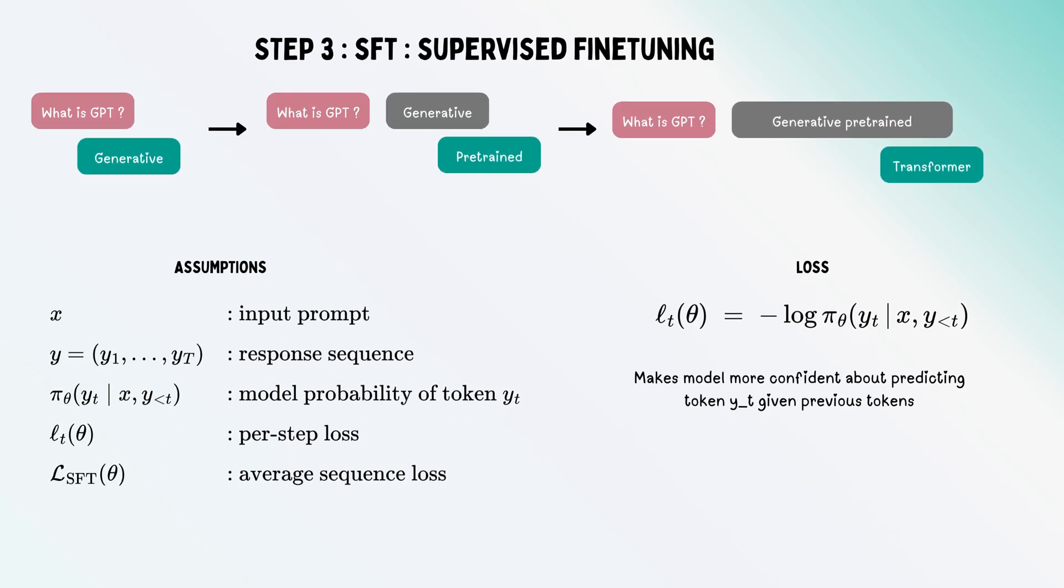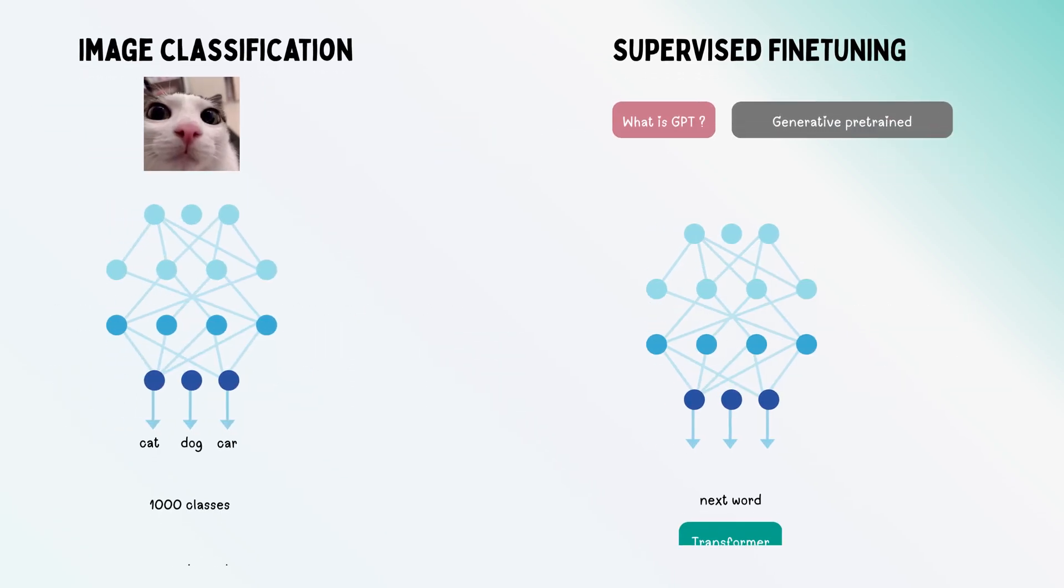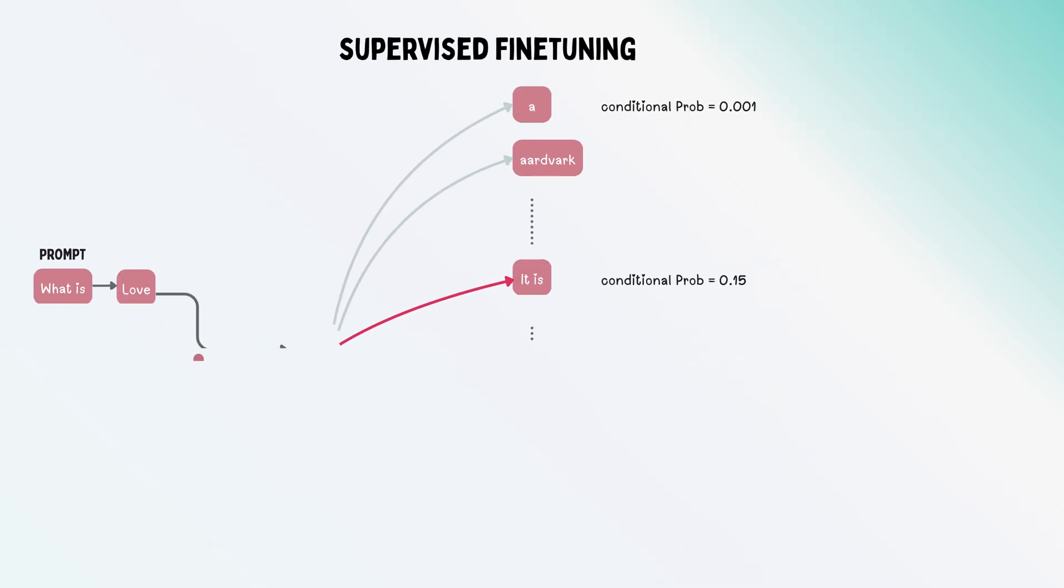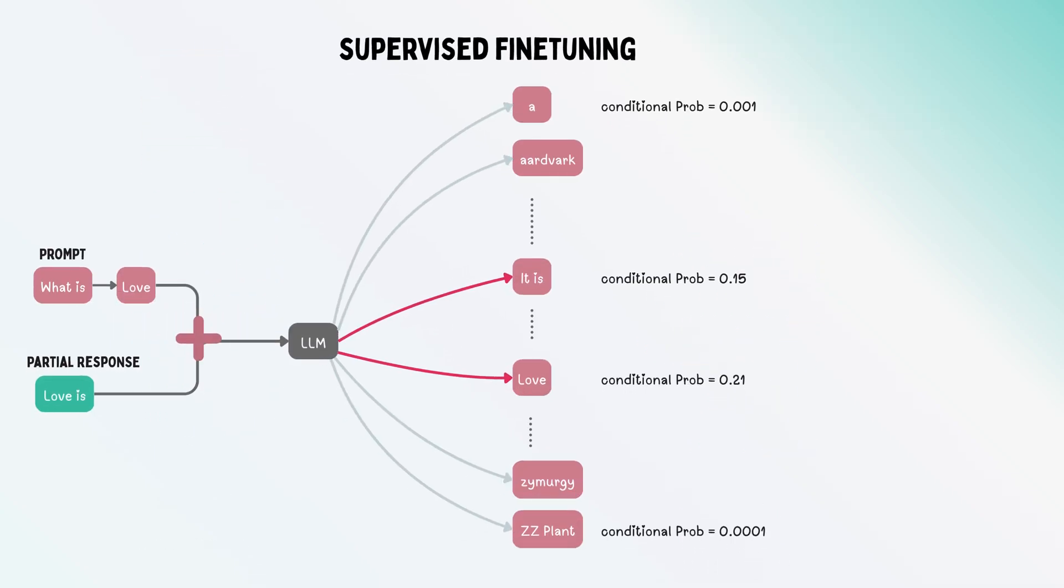This involves a lot of labeling. One analogy is image classification: if there are a thousand classes like ImageNet, a given image could be a cat, dog, truck, or car. Similarly, given the input containing the prompt plus partial response, you can take the next token from the dictionary.